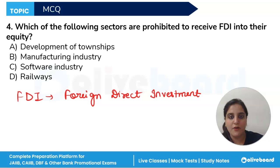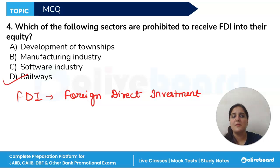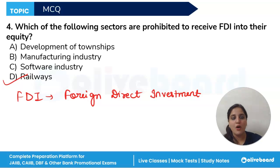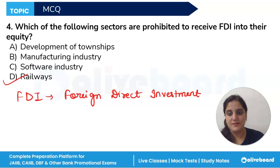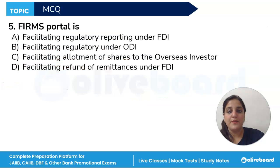The correct answer is option D — the railway sector is prohibited from receiving FDI into its equity.